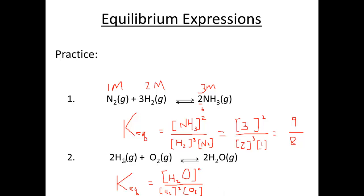Now if I told you the concentration of H2O was two molar, H2 was one molar, and O2 was one molar, we plug those in. Our K-eq value would be two squared divided by one squared times one, for a total of four.